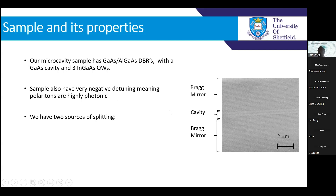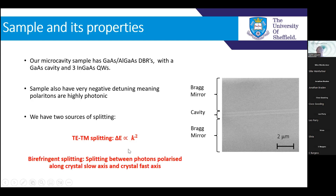In our sample, we have two sources of splitting. We have the TE-TM splitting, where the magnitude is proportional to the square of the wave vector — giving parabolic dispersion with larger splitting at higher wave vectors and smaller splitting at lower wave vectors. We also have what we call birefringent splitting, which we didn't initially expect but had to accommodate in our measurements, results, and simulations.